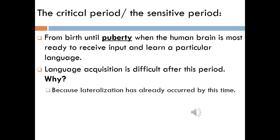Now we discuss the critical period, sometimes called the sensitive period. This period begins at birth until puberty, when the human brain is most ready to receive input and learn a particular language. Language acquisition is difficult after this period because lateralization has already occurred by this time.